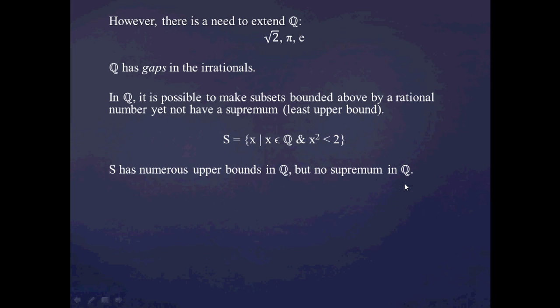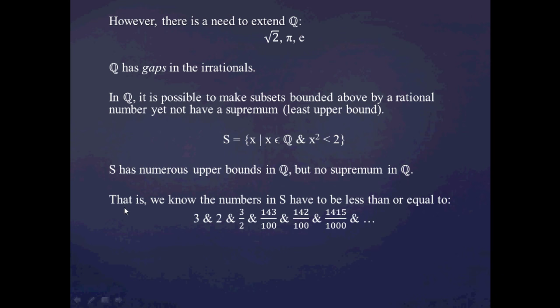But Q is not going to have a supremum for this set. I won't prove this analytically, but I'll show you the intuition. This subset of Q has no least upper bound which is a rational number. Computationally, I can start listing upper bounds of S approaching the supposed square root of 2 from the right. For example, I know 3 is an upper bound.